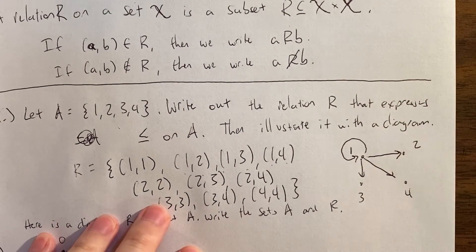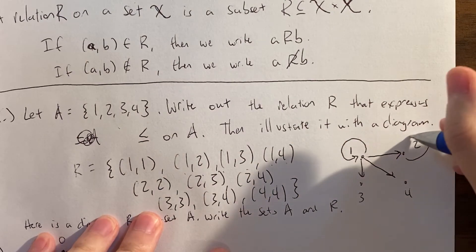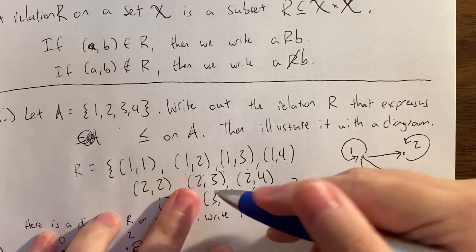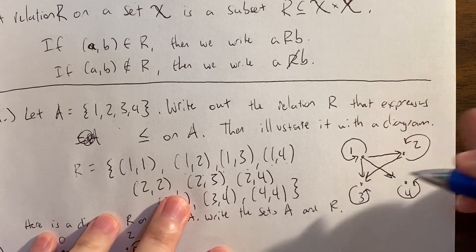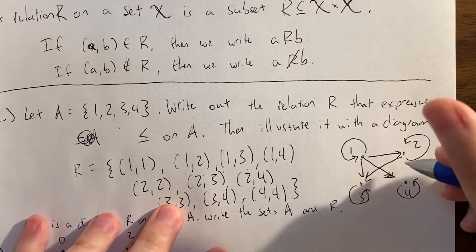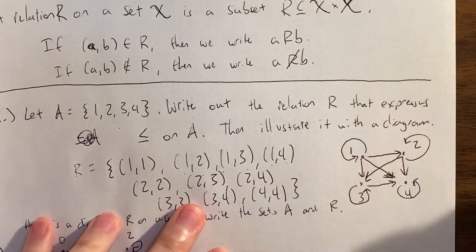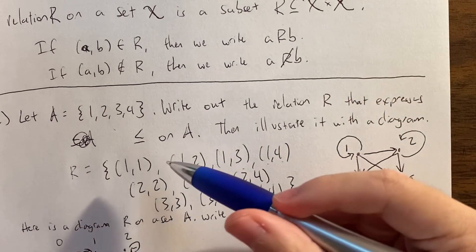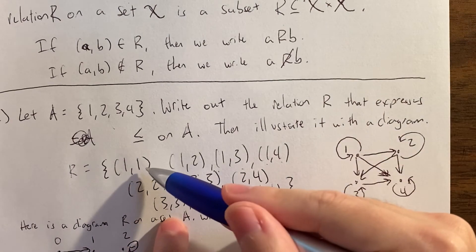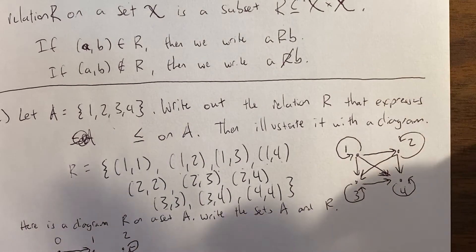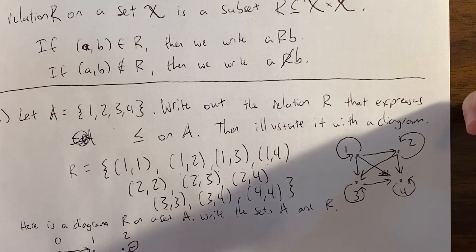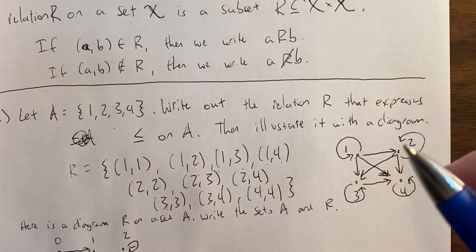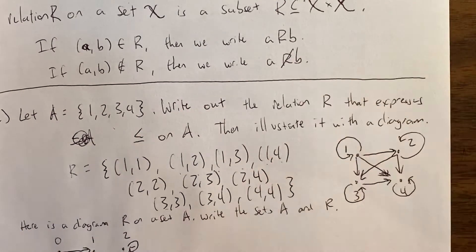We finish by drawing more arrows. We'll have loops at 2, 3, and 4 as well — everything has a loop because equality is part of the relation. Then for the non-loop arrows: 2 to 3, 2 to 4, and 3 to 4. It's okay if arrows cross — the only important thing is where arrows start and where they end. If you changed the relation to just less than, you would lose all the loops because (1,1), (2,2), (3,3), (4,4) would no longer hold.